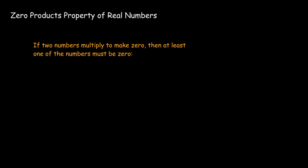This is based on a product of the real numbers that we call the zero products property. And it simply states that if you take two numbers and they multiply to make zero, then at least one of those numbers has to be zero. In other words, if a times b equals zero, then either a equals zero or b equals zero, or both could be zero.